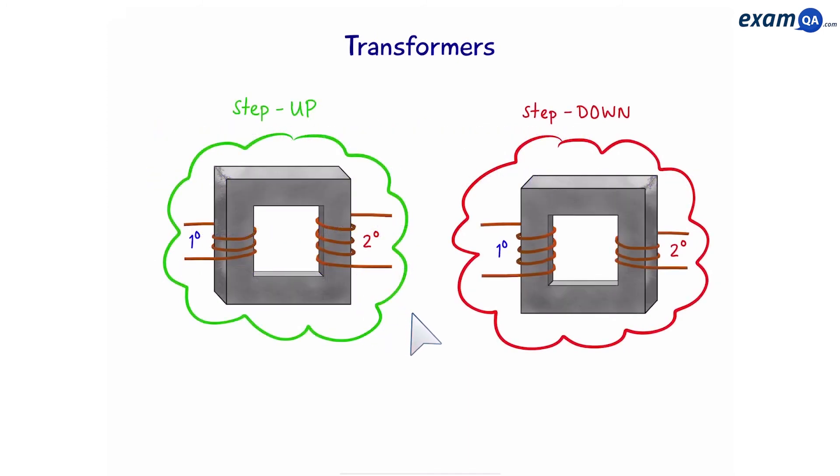Okay, so here we have two different types of transformers, a step-up and a step-down. A step-up transformer increases the voltage, whereas a step-down transformer decreases it. Now here's how you can tell whether it's step-up or step-down just by looking at it. Let's start with the one on the left. Here we have the primary coils and here we have the secondary coils. We can see that the number of coils has increased. Therefore, it's a step-up transformer.